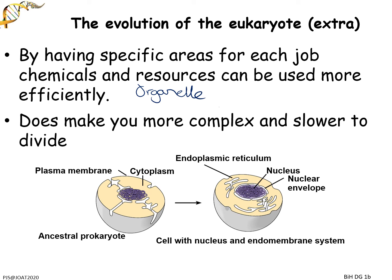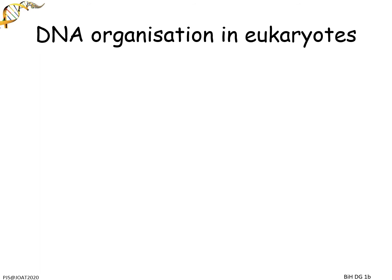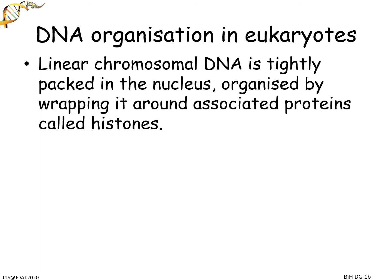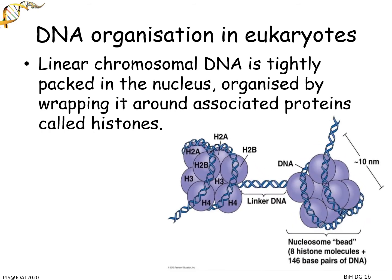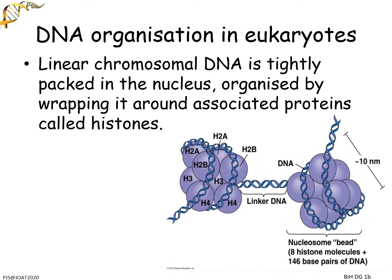In eukaryotes the organization is a little different. We have linear chromosomes - basically a line of DNA. Inside each of our cells we've got 46 long lines of DNA. Imagine 46 bits of thread just put down - they would end up in a ball, wrapped around each other, twisted, possibly pulling each other apart. You need to organize it in a very particular way.